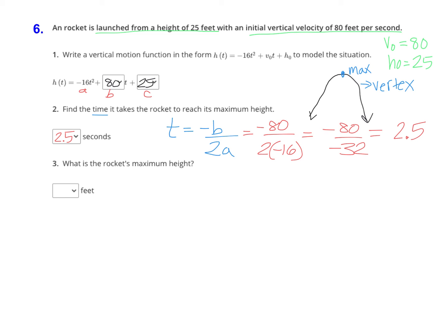Now that we know the time, we just figured out time was 2.5. Now we can find that maximum height by evaluating the function at two and a half. To do that, h(t), we need to find h(2.5) and then replace all the t's with two and a half.